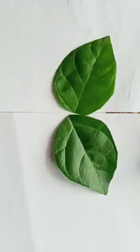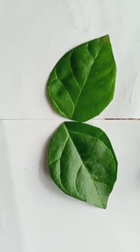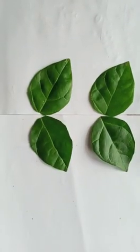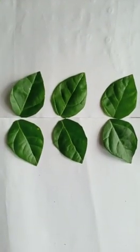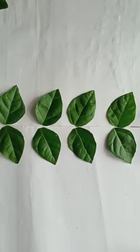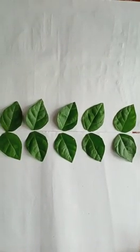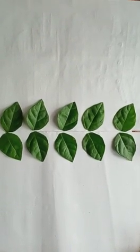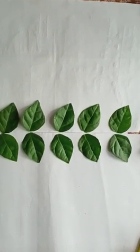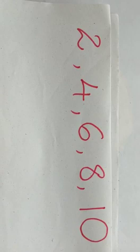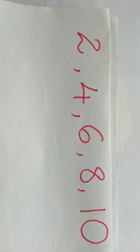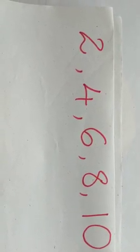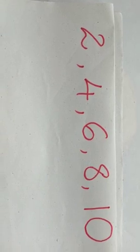The numbers two, four, six, eight, ten are in pairs. These are even numbers. Two, four, six, eight, ten — these are called even numbers.